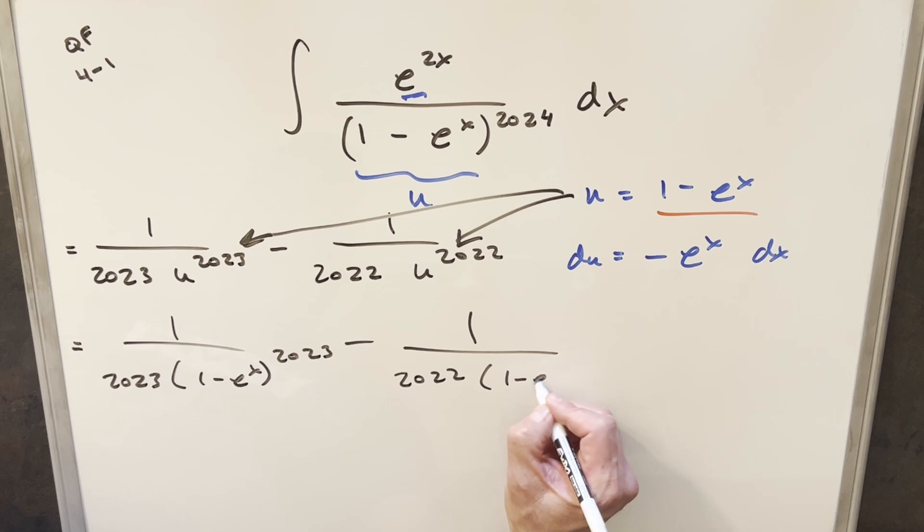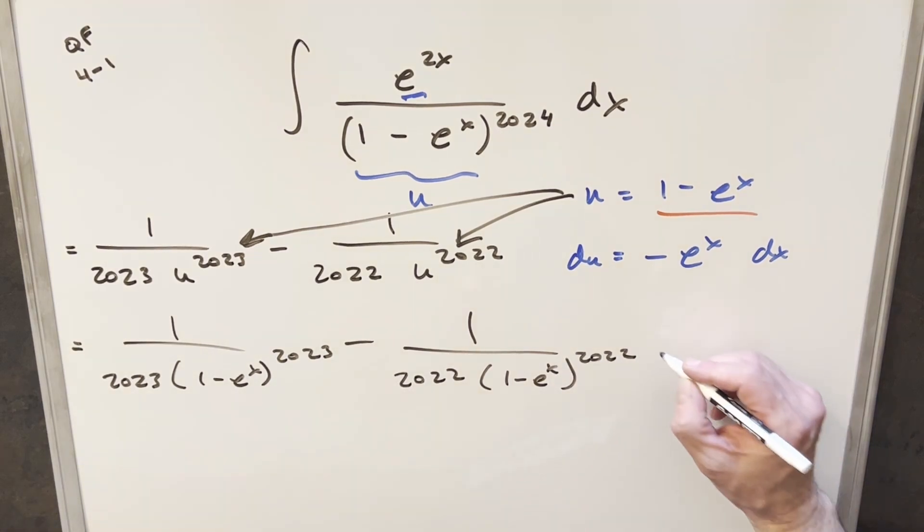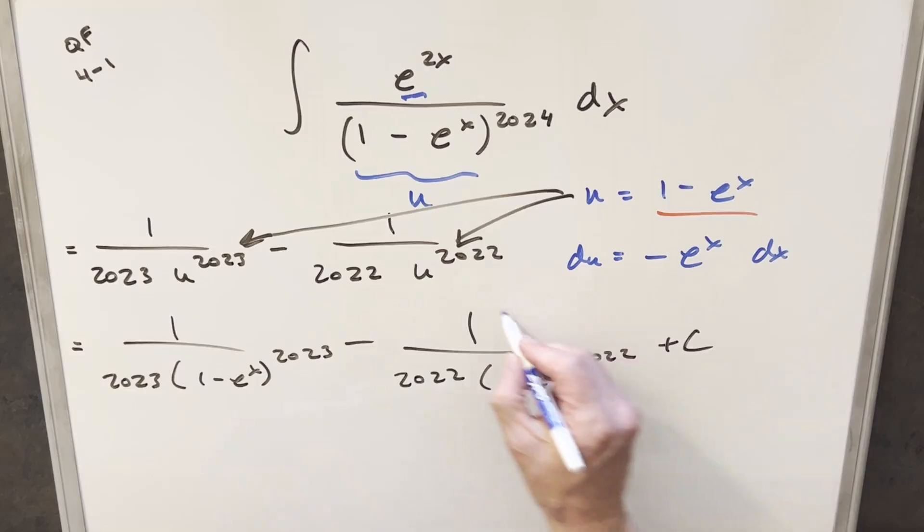The same thing here, we're going to have 1 minus e to the x to the 2022. Add a plus C, and that's it.